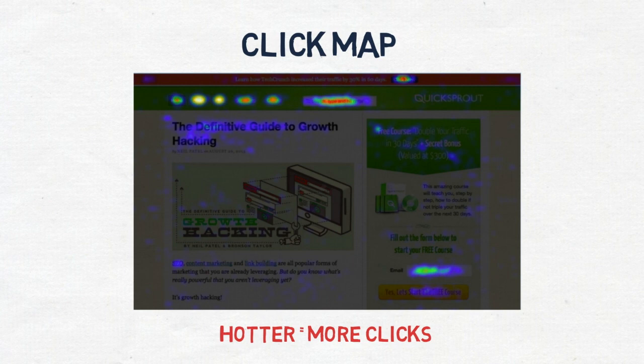Click mapping can also show you if visitors are getting distracted by non-clickable elements. In another Crazy Egg example, the area that gets a lot of clicks is brighter — so the more clicks an area gets, the brighter it appears.